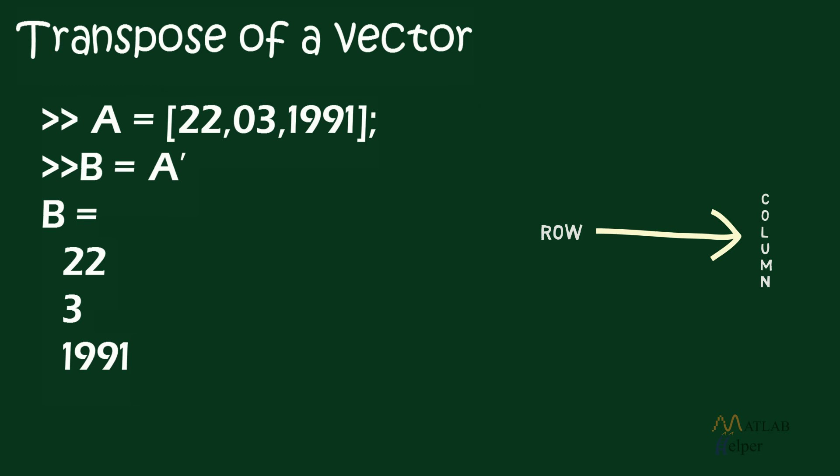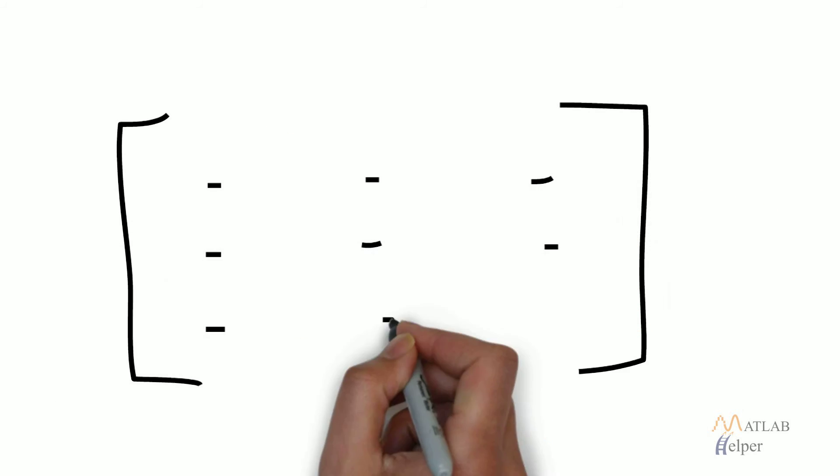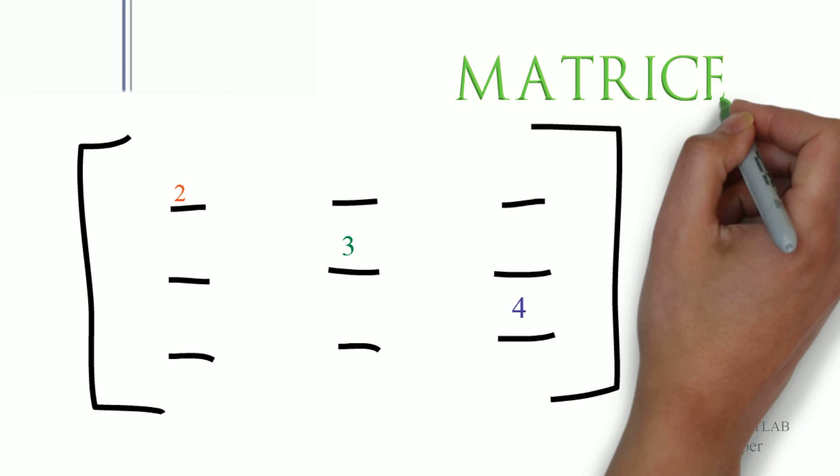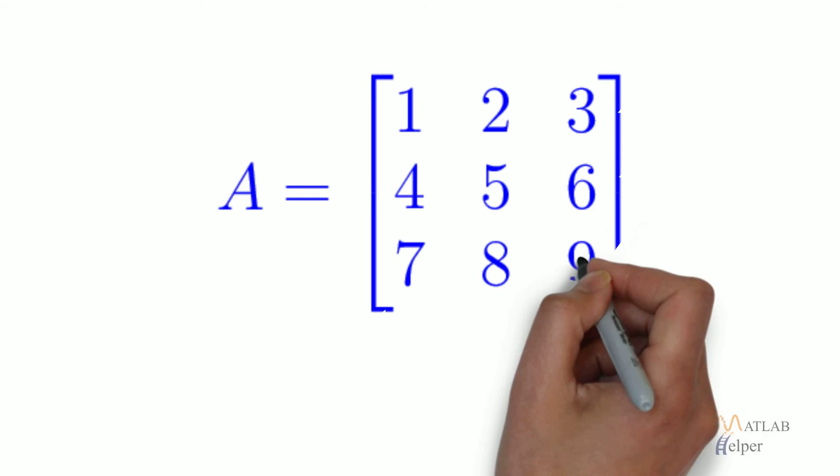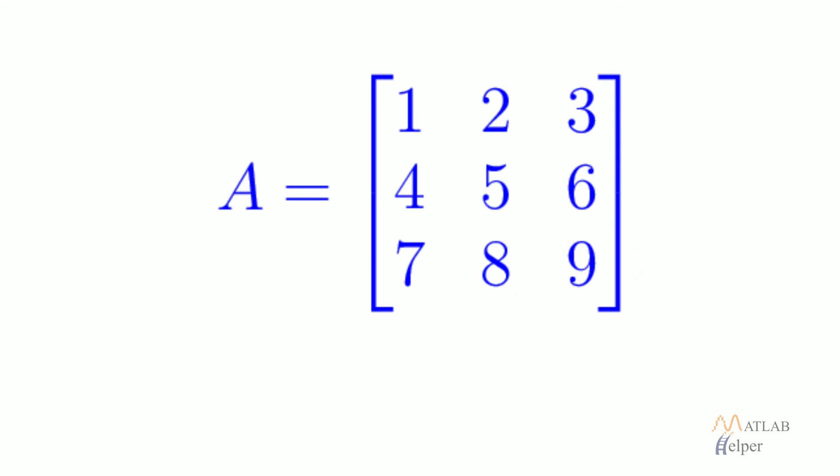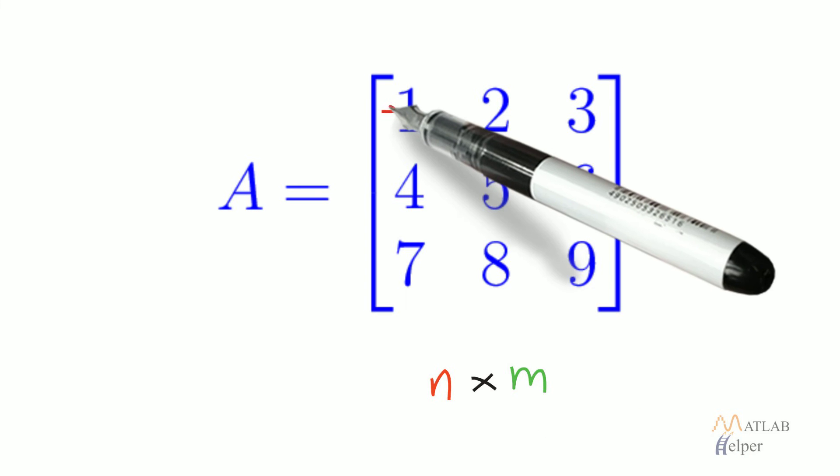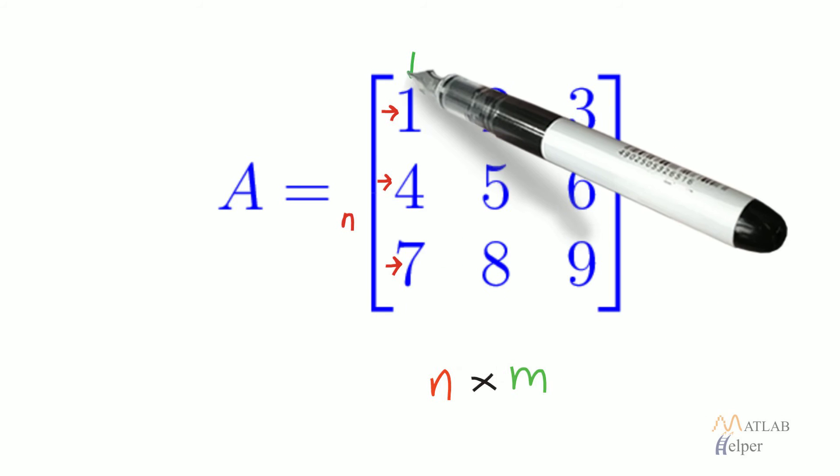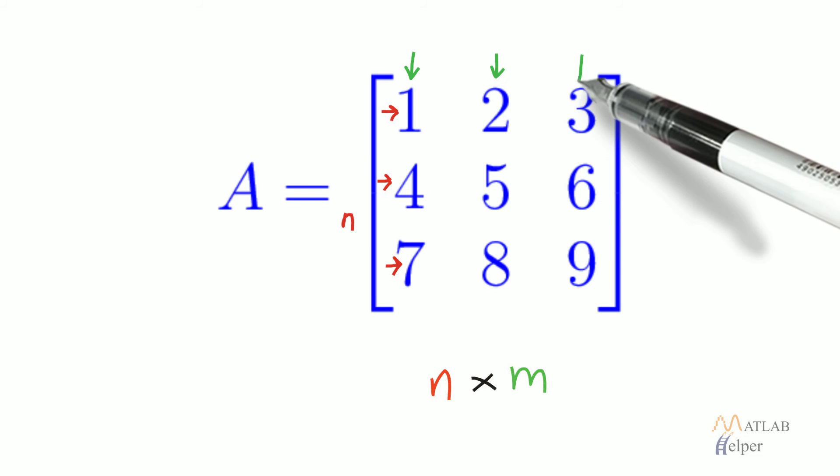Matrices. A matrix represents a two-dimensional array. All the values are arranged in the form of a grid with multiple columns and rows. Similar to the vectors, size of the matrix will be conventionally called as n cross m, with n being the number of rows and m as number of columns.